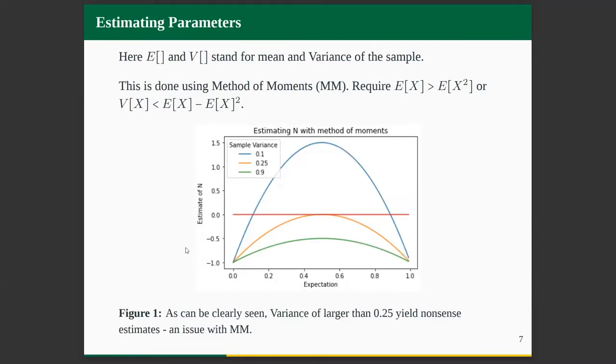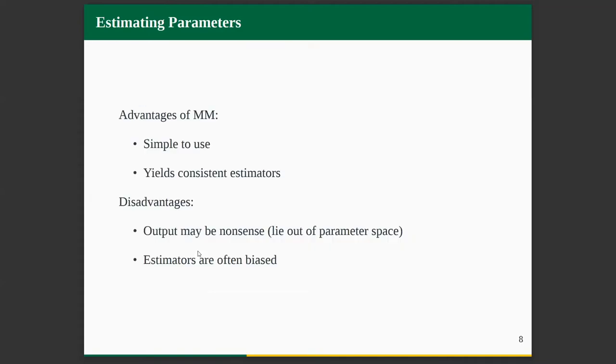But here's a small problem that we face. Here am I plotting the estimate of n versus my average, given different values of the variance. You can clearly see that for variance greater than 0.25, the estimate of n is negative. That's a nonsense estimate. How do we get a negative n? That is an issue with method of moments. Often things lie outside the parameter space. You might say, let's do something else. But method of moments is indeed one of the most used things in statistics because it's simple to use and it yields consistent estimators. By consistent, I mean that if you take a large amount of sample, if the sample size goes larger and larger to infinity, then eventually it will converge to your actual value. But those are the advantages. There are certain disadvantages, you may get a nonsense output like the negative n, or you can get biased estimators.